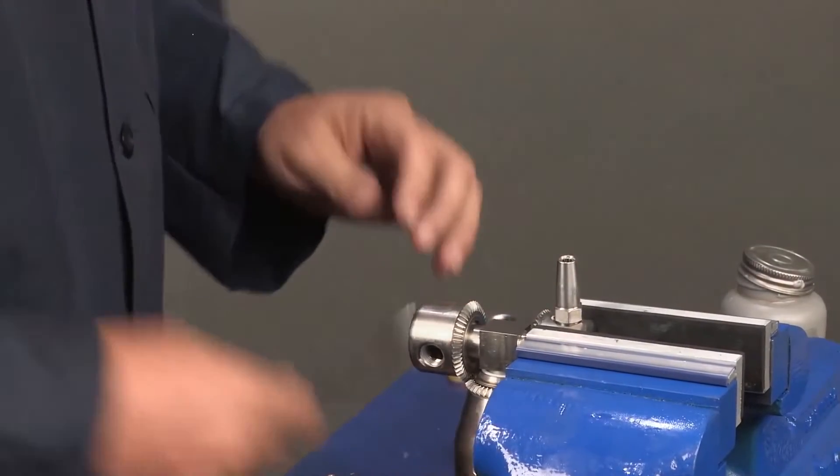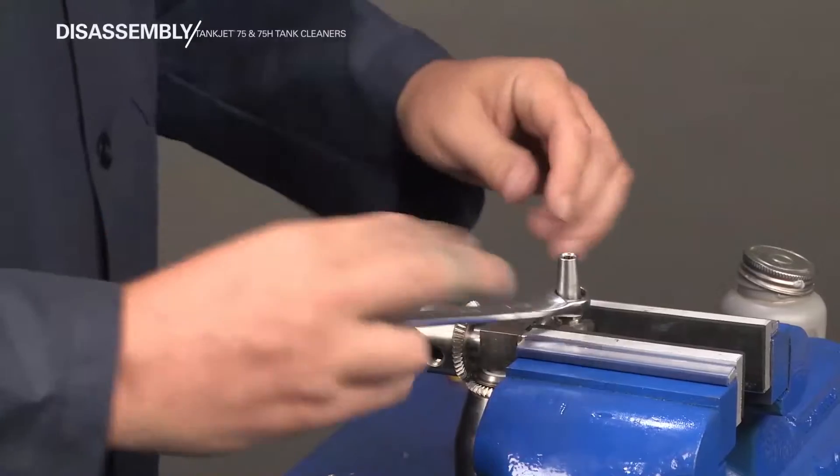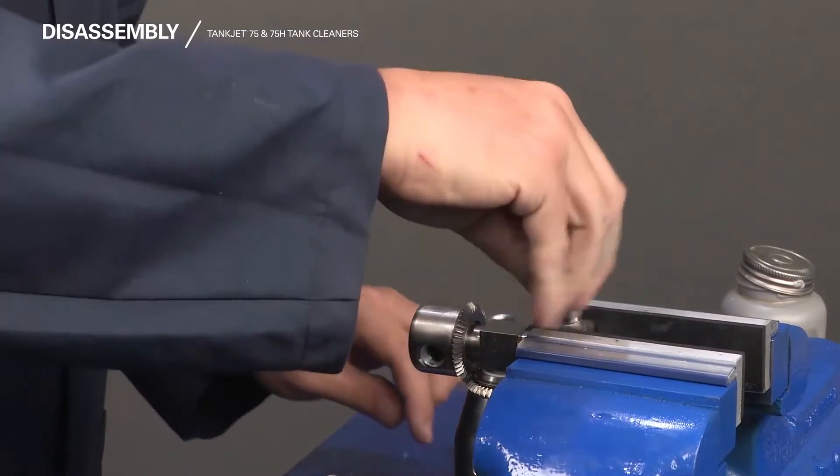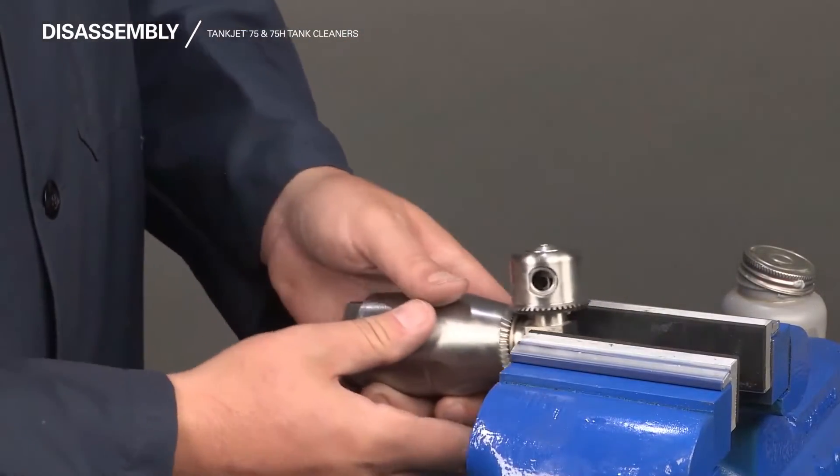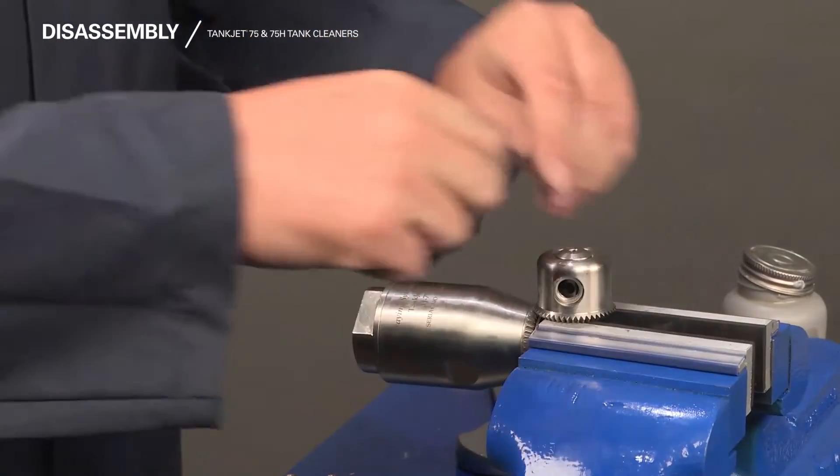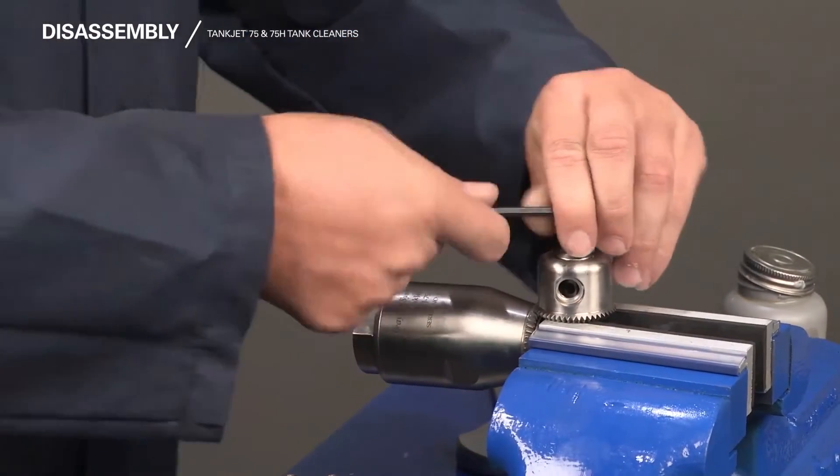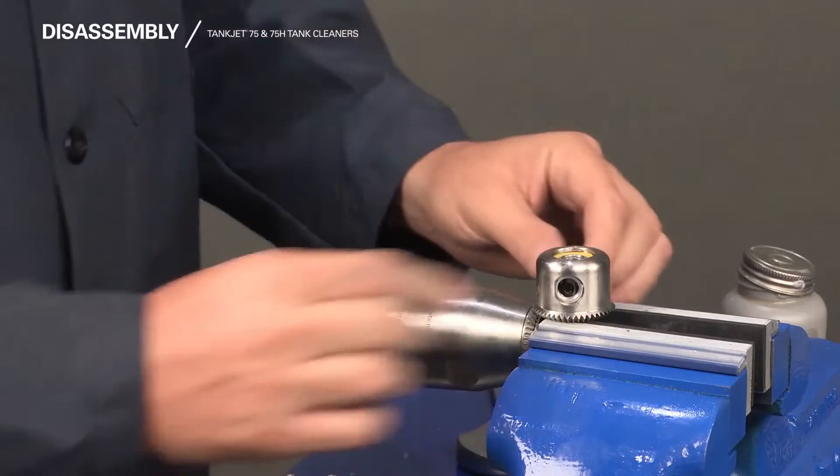We begin by removing the nozzle assemblies and repeating for the second hub. Next, with a 5/32 inch Allen key, remove the nozzle shaft cap to free the nozzle body and repeat for the other side.